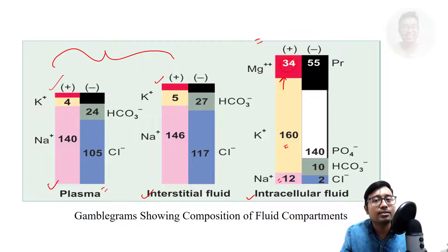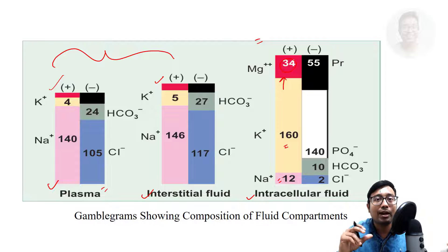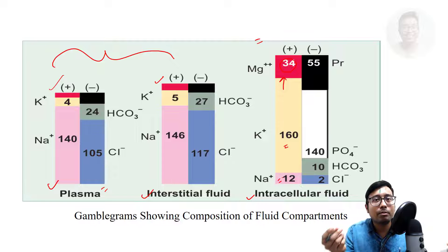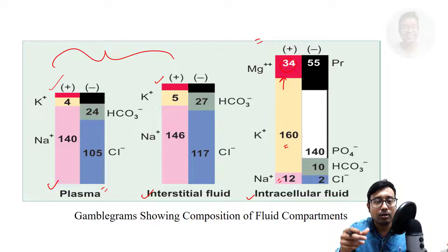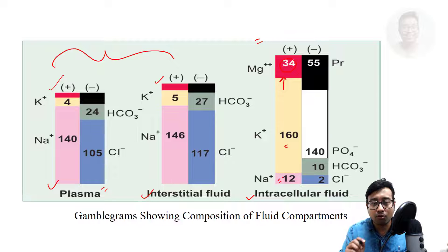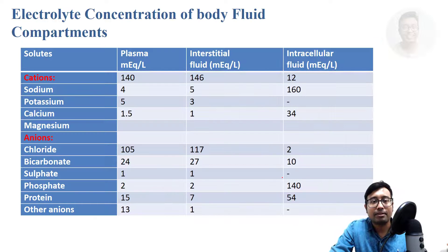When we come to intracellular fluid, the ratio of sodium and potassium just reverses — potassium is huge at 160 and sodium is only 12. This is because of the direction of the sodium-potassium pump. Sodium-potassium ATPase is an active transport pump that drives out sodium and takes in potassium, maintaining the strikingly different concentrations of sodium and potassium in intra- and extracellular fluid.